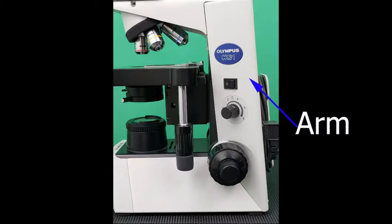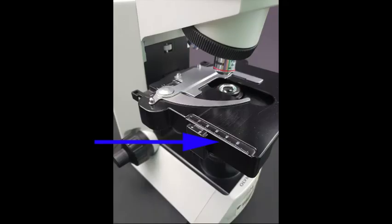Arm: The vertical, usually curved or sometimes straight part connecting the head to the base of the instrument. The microscope arm contains the following parts.